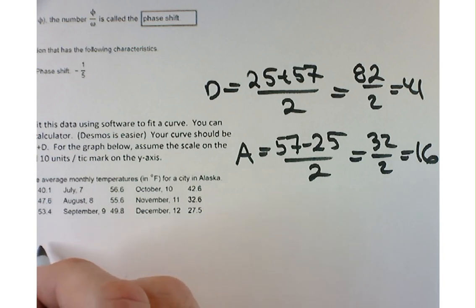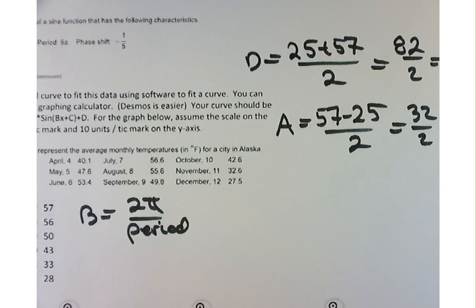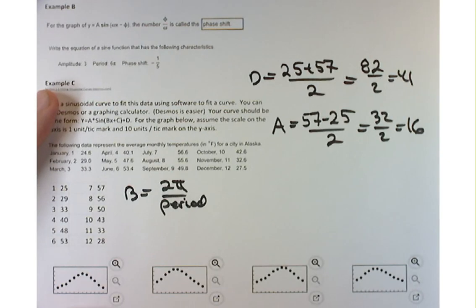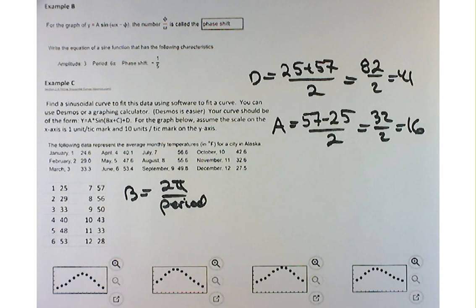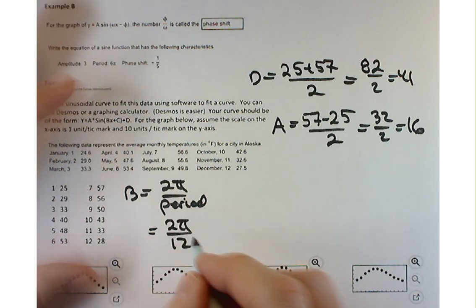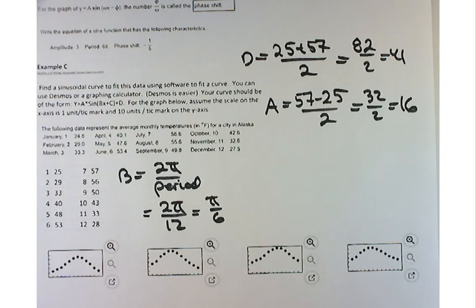Figure out what B is. B equals 2 pi divided by the period. Look at our data. How long before this graph repeats itself in terms of the x values? How long is it going to take before those temperatures cycle back and repeat themselves? 12 months. Right. So one year, but the data is given in months, so we'll stick with months. So B equals pi over 6. Three down, one to go.